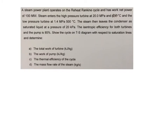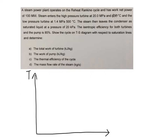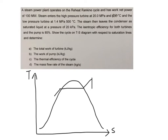You have a problem that involves a steam power plant that operates on the Reheat Rankine cycle. Upon reading that statement, you should know that you are dealing with the Reheat Rankine cycle, so you can plot your TS diagram first. You are going to have two turbines — one is the high pressure turbine.